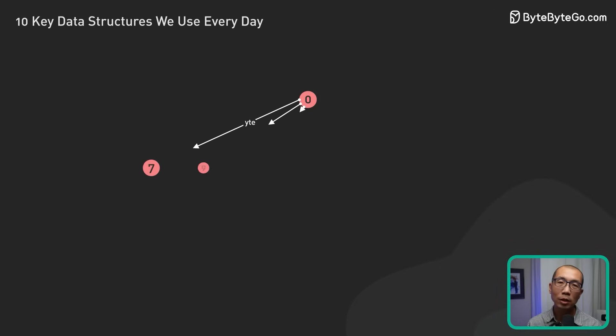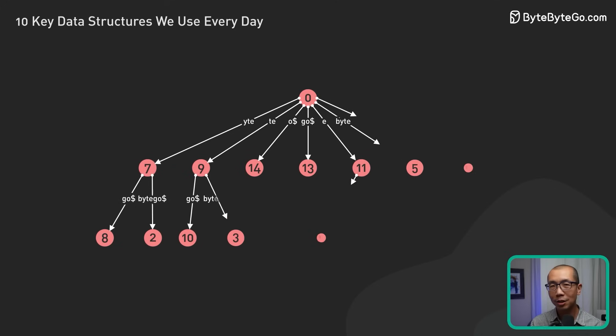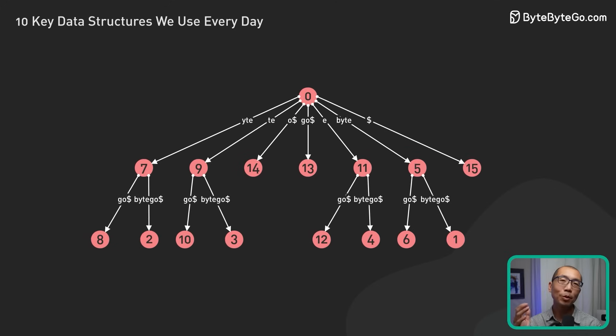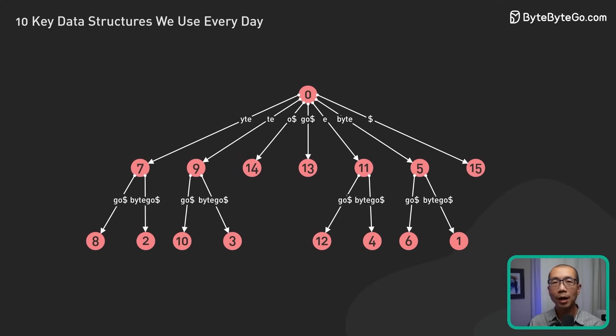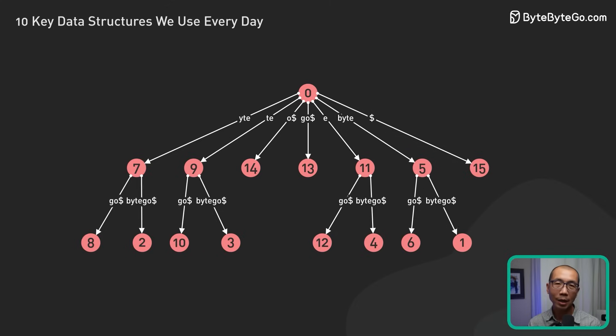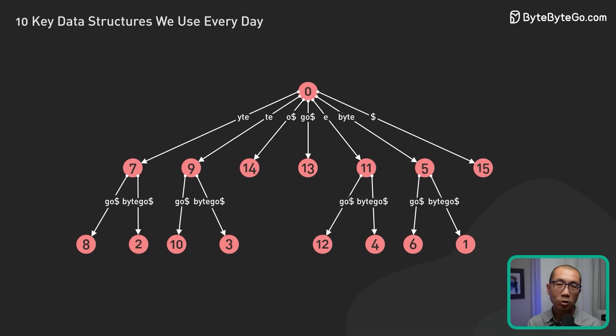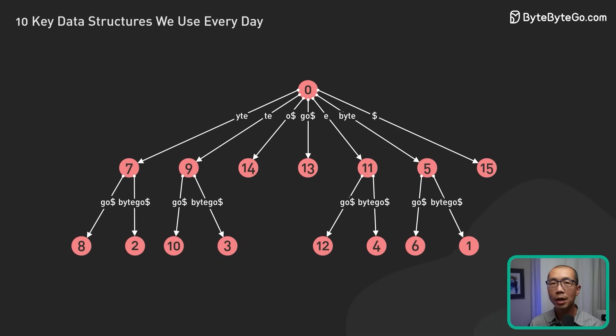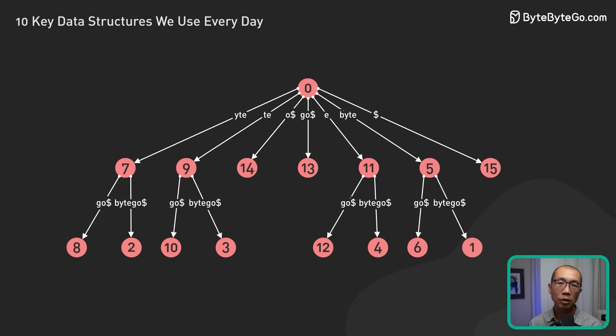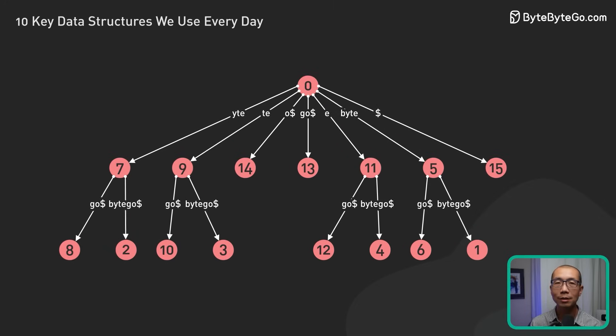Suffix trees are specialized for searching strings in documents. This makes them perfect for text editors and search algorithms. In a search engine, a suffix tree can be used to efficiently locate all occurrences of a search term within a large corpus of text.